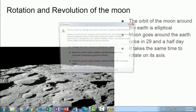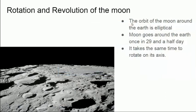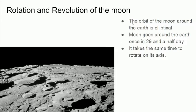Regarding the rotation and revolution of the moon: the moon moves in its orbit in an elliptical manner with a tilt of around 5 degrees. When the moon goes around the earth once, it takes 29 and a half days — starting from Amavasya to Purnima and back to Amavasya.